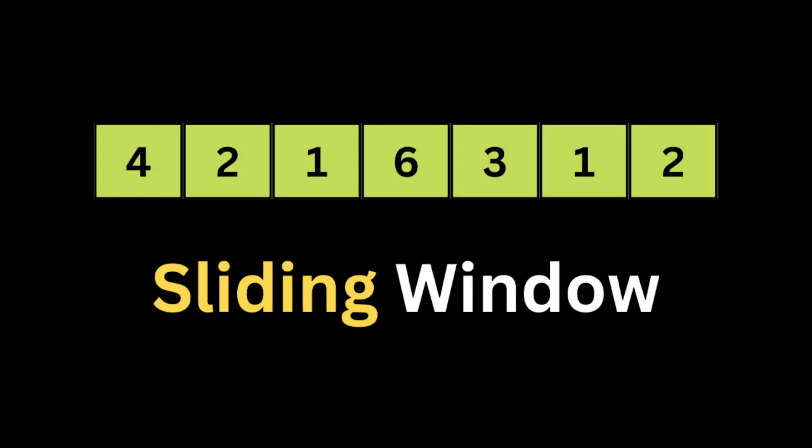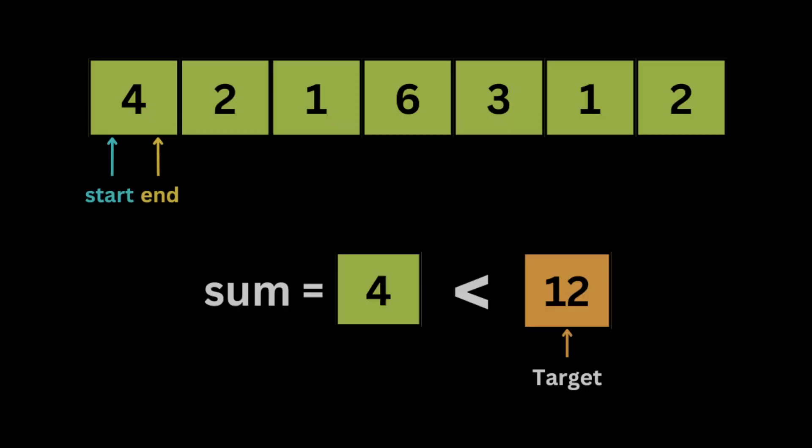Based on those conditions we can choose the best technique. If the input array has only positive integers, the best and easiest technique is the sliding window. Let's take an example — we have an input array of only positive numbers and a target of 12.